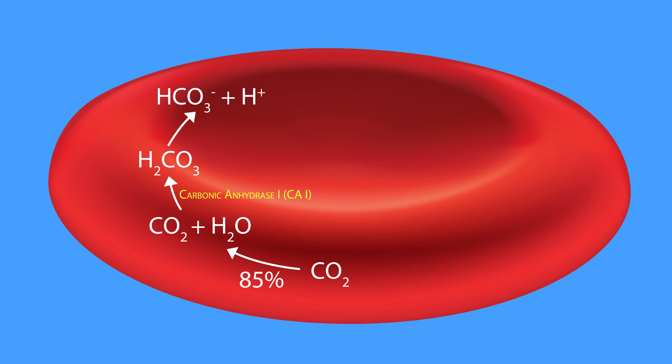To keep the reaction moving toward the formation of bicarbonate and hydrogen ions, the bicarbonate ions are immediately transported out of the red blood cell in exchange for chloride ions via the bicarbonate-chloride exchanger. This transporter is referred to as the anion exchanger 1, or AE1 for short. Sometimes, it's referred to as band 3.